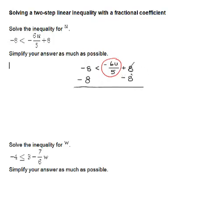Okay, so 8 minus 8 gives me a 0, so that goes away. And I have a negative 6u over 5. And I have a minus 8, a negative 8 minus an 8, so I actually have a negative 16. It's not 0—negative 8, take away another 8 is going to be more negative, so I have a negative 16.